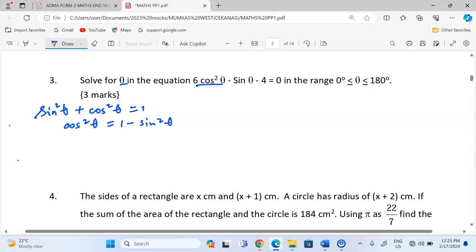From this identity, we should know that cos²θ = 1 - sin²θ. So when we replace cos²θ with this part, we'll be having 6 times (1 - sin²θ) - sinθ - 4 = 0.